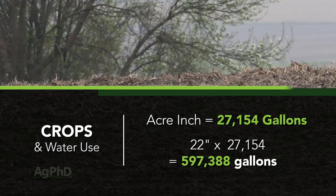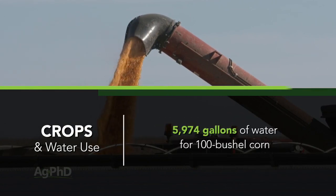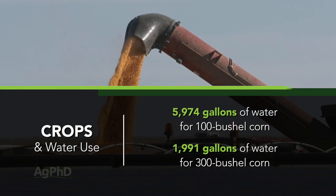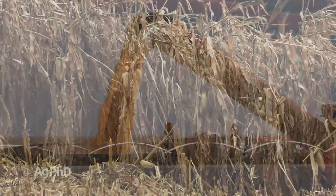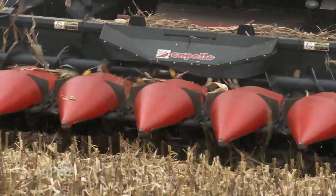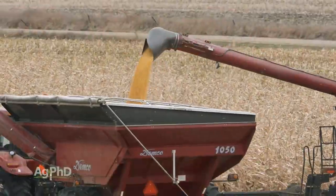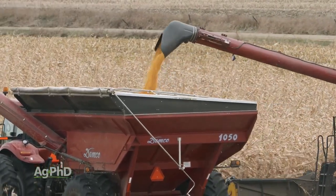If you divide that out by 100 bushels versus 300 bushels, here's what it amounts to: the 100 bushels took 5,974 gallons per bushel; the 300-bushel corn took 1,991 gallons per bushel. I wanted to start with this to say both things are possible — it took 6,000 gallons of water in one case versus 2,000 gallons of water per bushel in another case.